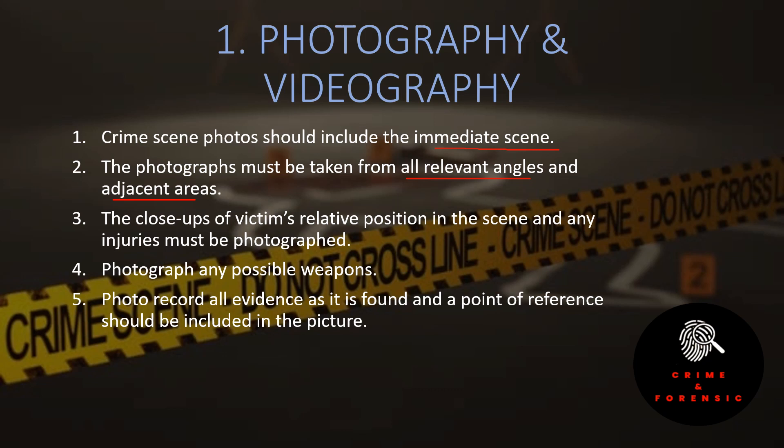The close-ups of the victim's relative position, victim's position, and any injuries must be photographed so that the body and injuries can have detailed documentation. Photograph any possible weapon — if there is any weapon present at the crime scene, it should also be photographed, because it may have been used to commit the crime.